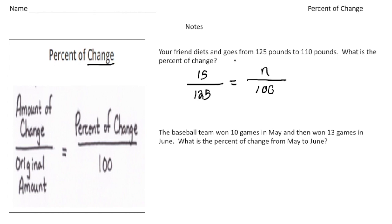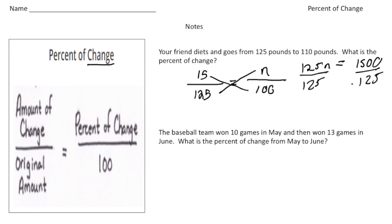Now that we have our proportion set up, we can write an equation: 125 times n equals 15 times 100, which is 1500, because the cross products of two equal fractions are always the same. We solve for n by dividing both sides by 125, and 1500 divided by 125 gives us 12. So there was a 12% change — going from 125 pounds to 110 pounds is a 12% decrease. You want to include either 'increase' or 'decrease' in your answer.